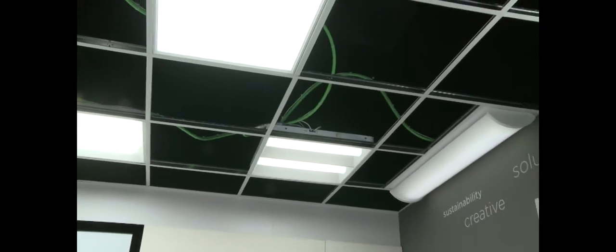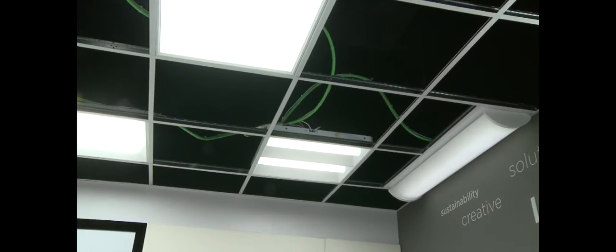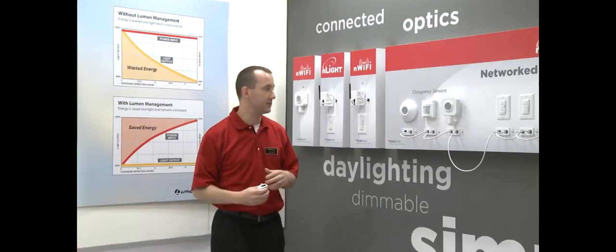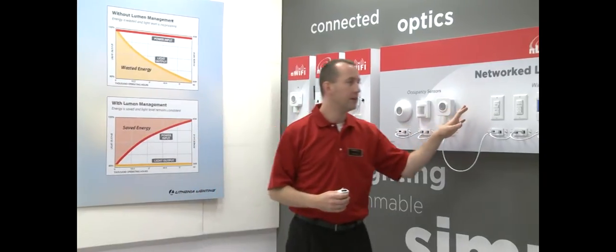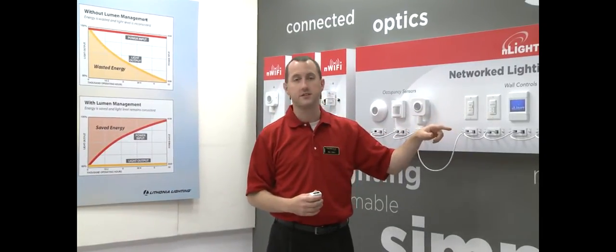This entire room with all these fixtures is all wired together. For example purposes, we put some other sensors here on the wall. Nlight has a full line of digital occupancy sensors. We also have a lot of different wall stations.